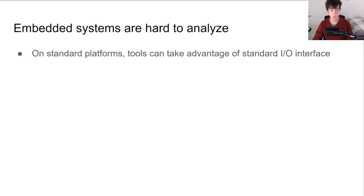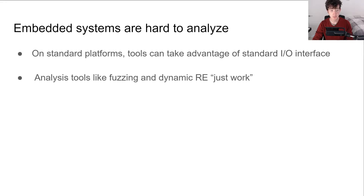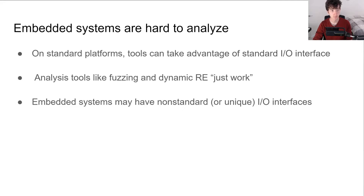Platforms like Linux and Windows have standard, well-documented interfaces for interacting with hardware. This means that tools just work — all you have to do is obtain the code you want to test, run it within an emulator like QEMU, and you can immediately apply techniques like fuzzing and dynamic reverse engineering. But the same is not true for embedded systems.